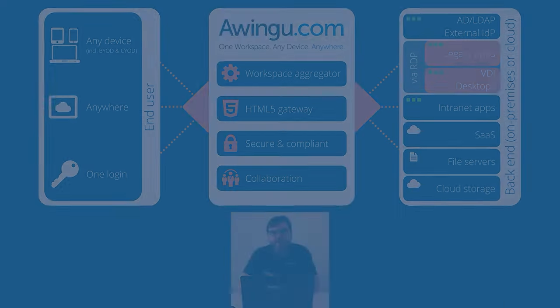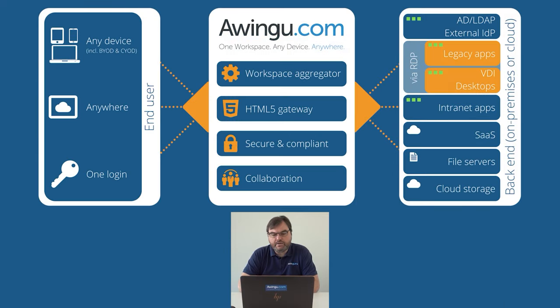As you can see, the Awingu architecture consists of three layers: the client layer, which is the web browser, the Awingu layer itself, and then the backend layer.